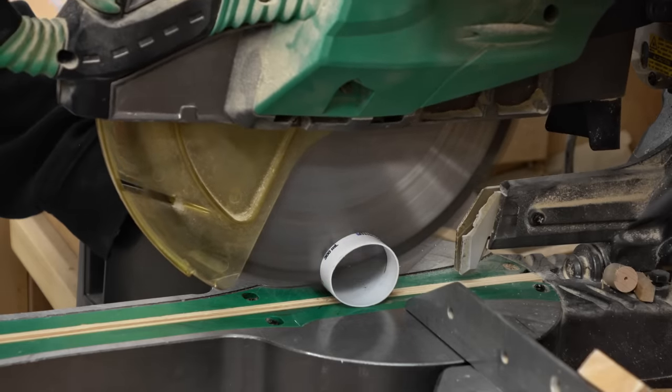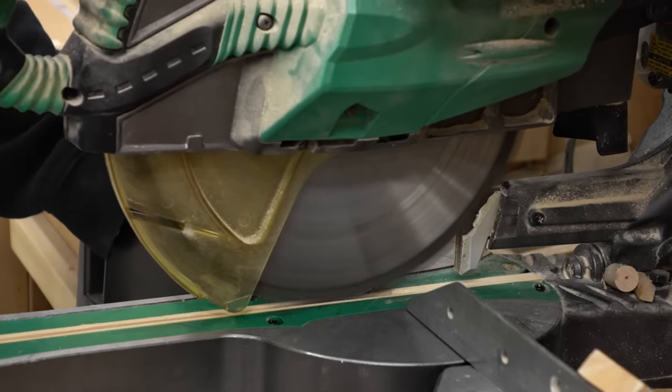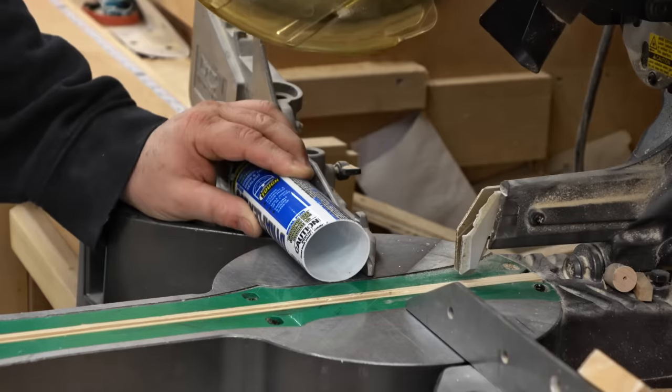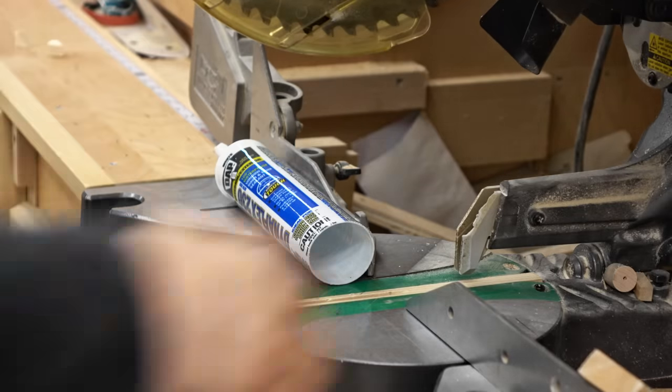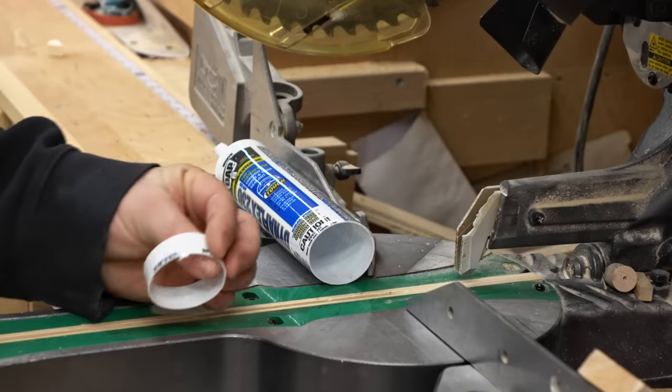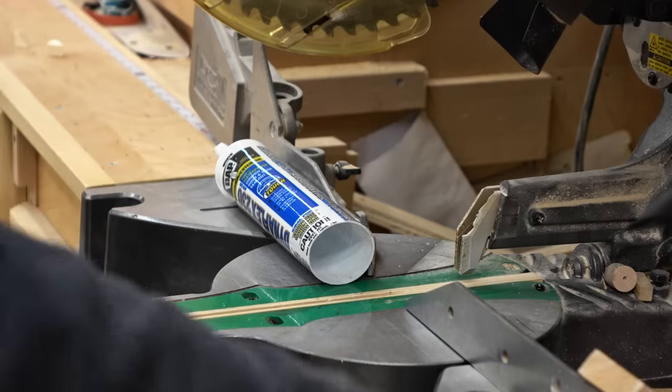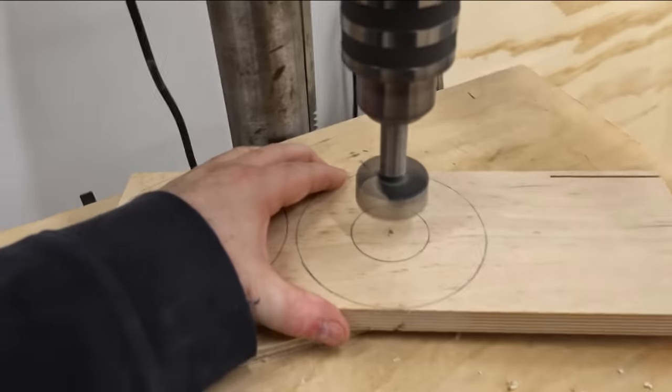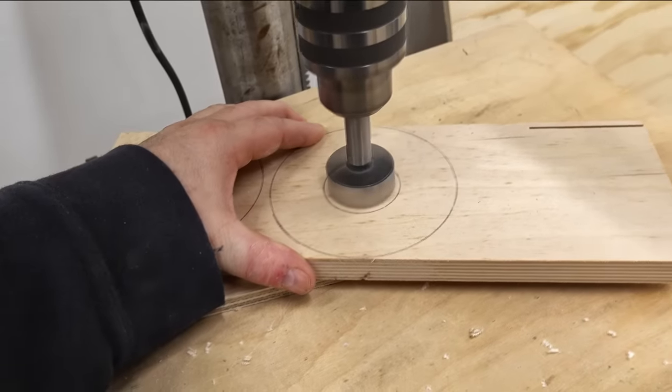So the first challenge, really, was to find something to use as a bearing, so that the wheels would spin freely and not wear out prematurely. I've got this empty caulking tube, and the plastic that these are made from is really slick. And of course, you can't beat the price. So, well worth a try anyway.